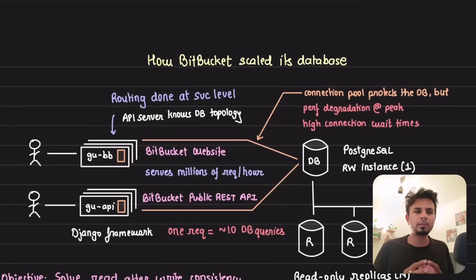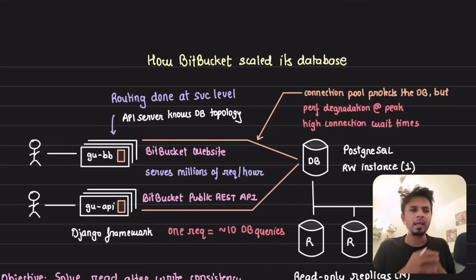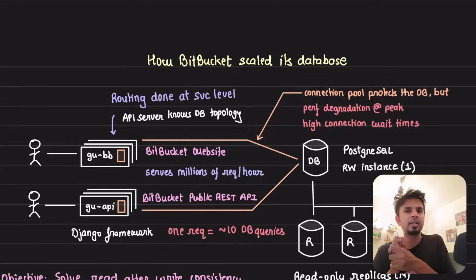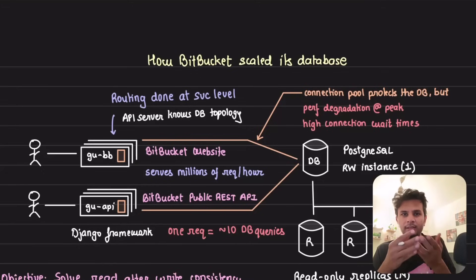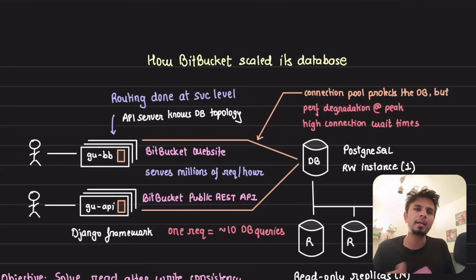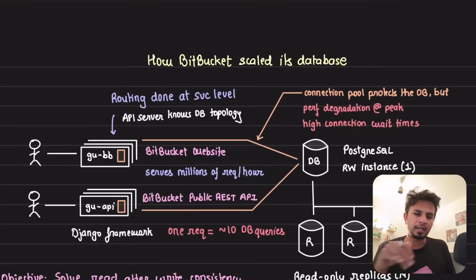One of the most interesting problems in a database is to ensure read-your-write consistency. A lot of people understand it theoretically, but today we'll dig deeper and figure out how to actually implement it. First we'll understand what it is, then we'll see how it is implemented — all in the context of a dissection of a blog from Atlassian about how Bitbucket scaled their database and made it more performant.